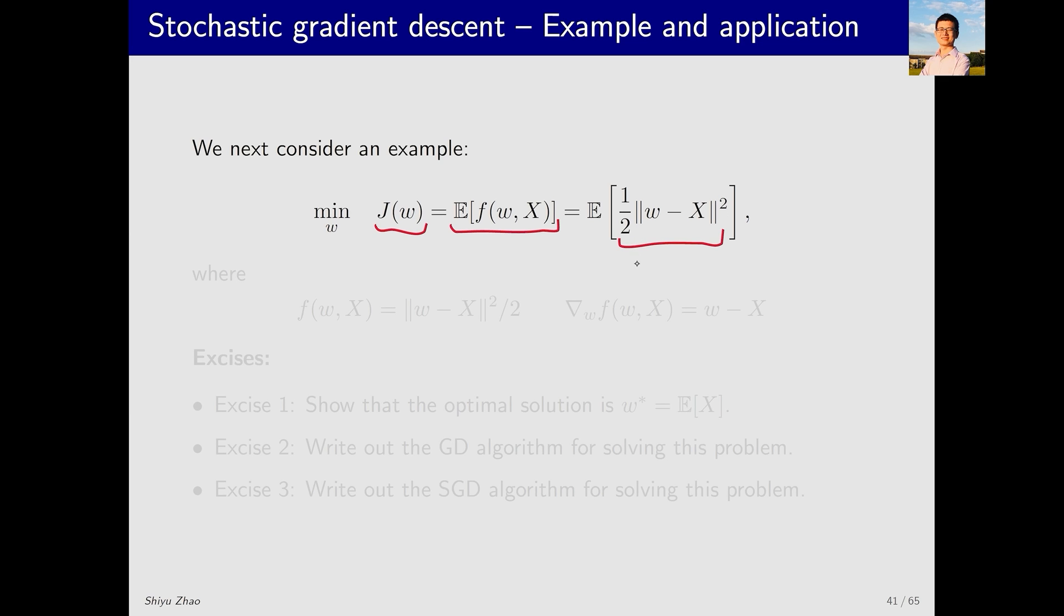which is one half times the norm squared of w minus x. If both are vectors, this is the square of their norm. Intuitively, this represents the distance between w and x. We aim to minimize the distance between them.